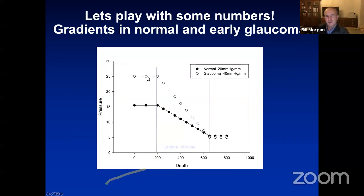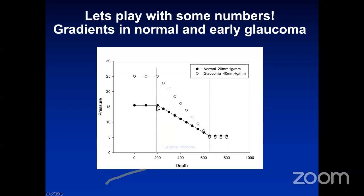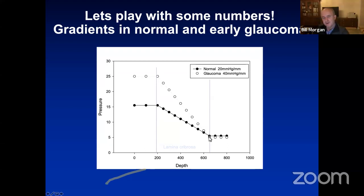Let's look at this graphically. If a patient has an intraocular pressure of 15 and a CSF pressure of 0 at eye level, so the retro-lamina tissue pressure is about 5, then the typical gradient would be about 20 millimetres of mercury. If the eye pressure rises to 25, the gradient would become much steeper—basically double, to 40 millimetres of mercury per millimetre.